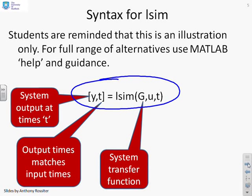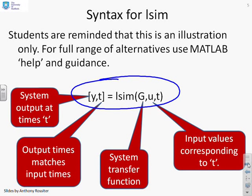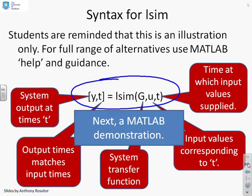g, that represents my system transfer function. u, that's the input values corresponding to the vector t. And obviously, t here in the input is the time at which the input values are supplied. Now, you will notice that I've got the same t in the input and the output. I could use different names, but they would come out to be the same anyway. So I've made them the same here just to demonstrate that point.